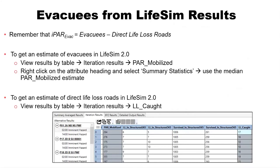Getting the evacuees data from LifeSim: you have your PAR mobilized, and then life loss caught on roads, so your IPAR evac is PAR mobilized less direct life loss on roads. You'll be able to get the information to come up with IPAR estimates from the results tables in LifeSim. The only thing you additionally need for the non-evacuees group is that people-with-no-power estimate, which is not an easy number to come up with.